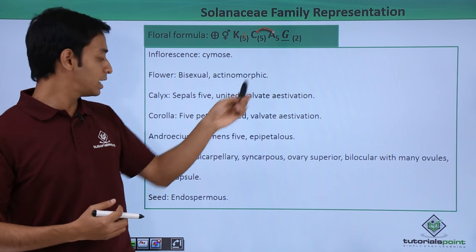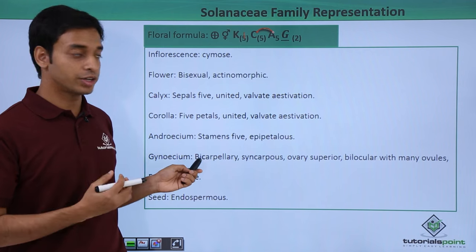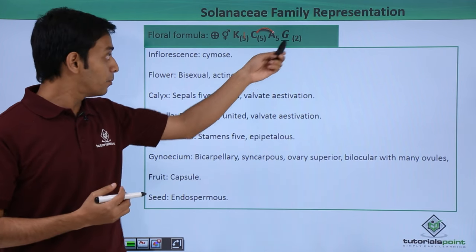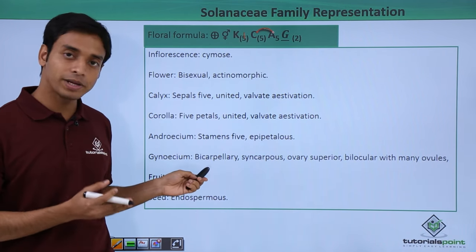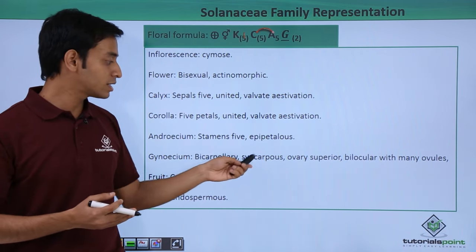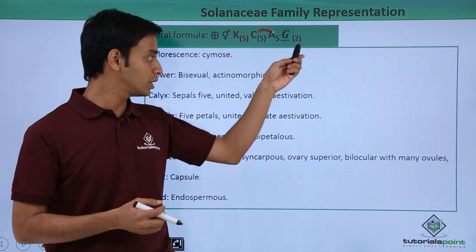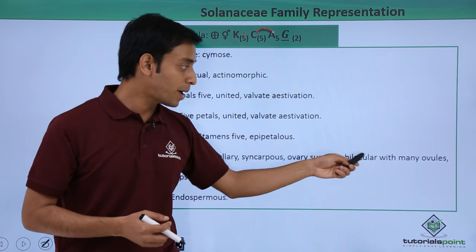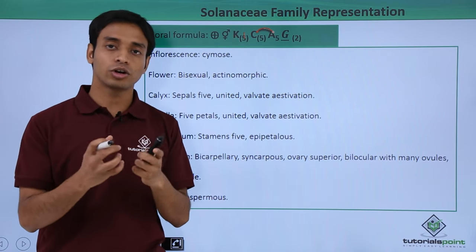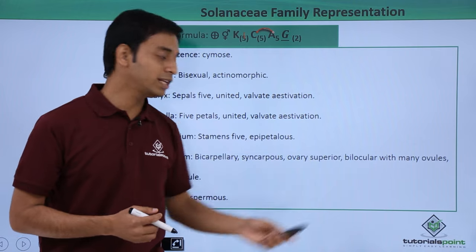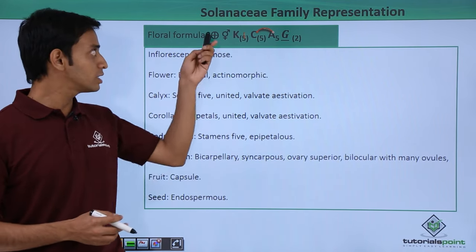From the formula we can understand the gynoecium is superior and there are two carpels in fused form. The gynoecium is bicarpellary and syncarpous. The ovary is superior and bilocular — meaning it has two locules or chambers — with many ovules.